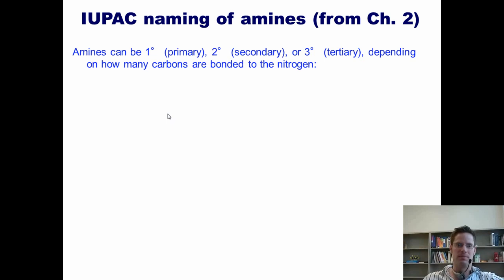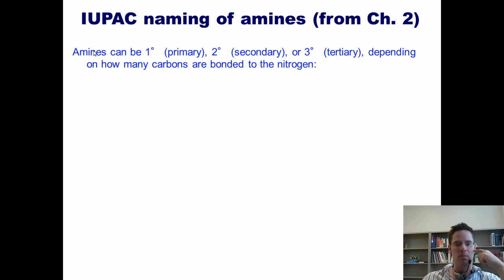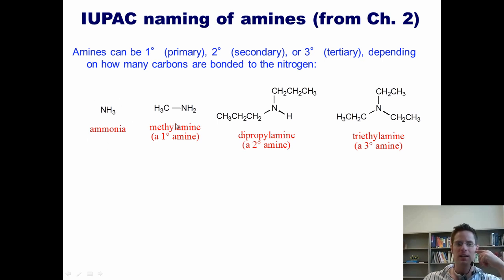Let's begin by addressing the systematic naming of amines, with which you already have some familiarity. Amines, as you know, can either be primary, secondary, or tertiary, depending on how many carbons are bonded to the nitrogen. Thus, we could say that methyl amine, where a nitrogen is stuck to one carbon, is primary. Dipropyl amine, this example, has a nitrogen stuck to two carbons, so it's secondary. Triethyl amine has a nitrogen stuck to three carbons, so it's tertiary. Ammonia is the only example where you have a nitrogen that's not stuck to any carbons.